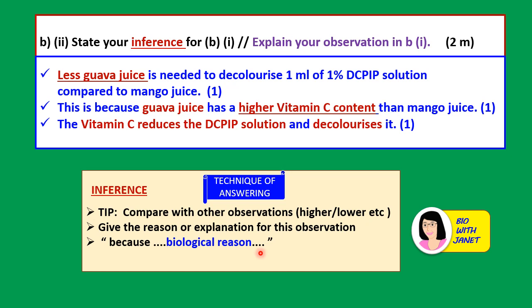The inference answer: less guava juice is needed to decolorize 1 ml of 1% DCPIP solution compared to mango juice. This is because guava juice has a higher vitamin C content than mango juice. Therefore, it has more vitamin C to reduce and decolorize the DCPIP solution, so less of it is needed. The vitamin C reduces the DCPIP solution and decolorizes it — that is the biological explanation. The main point is that guava juice has higher vitamin C content than mango juice.